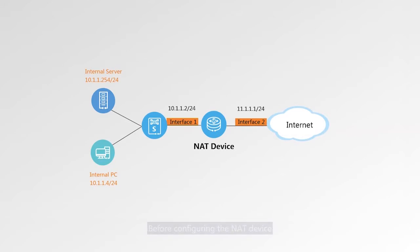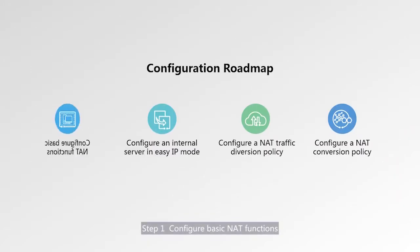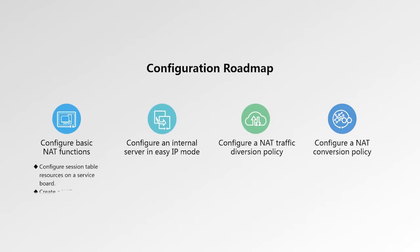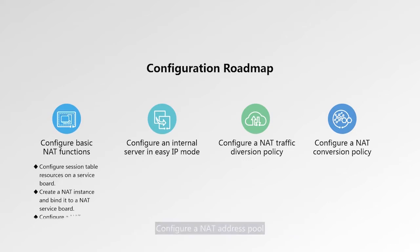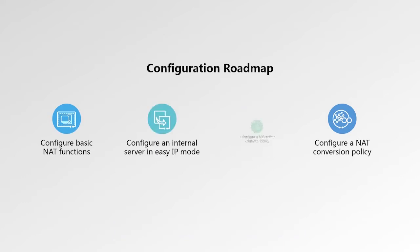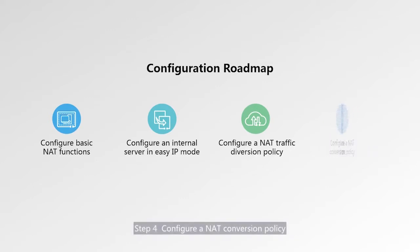Before configuring the NAT device, let's look at the configuration roadmap. Step 1: Configure basic NAT functions, which involves the following sub-steps: configure session table resources on a service board, create a NAT instance and bind it to a NAT service board, and configure a NAT address pool. Step 2: Configure an internal server in easy IP mode. Step 3: Configure a NAT traffic diversion policy. Step 4: Configure a NAT conversion policy.